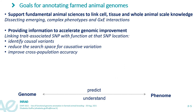The goals for annotating the genomes of farmed animals are aimed at fundamental sciences — supporting fundamental animal sciences to link cell, tissue, and whole animal scale knowledge; for example, dissecting emerging complex phenotypes and genotype-by-environment interactions; and providing information to accelerate genomic improvement, especially in the context of genomic selection. Linking trait-associated SNPs with function at that SNP location is interesting for identifying causal variants, but also to reduce the search space for causative variation and improve cross-population accuracy.